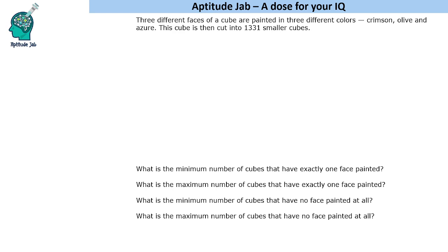This cube is cut into 1331 smaller cubes. We have to answer four questions: the minimum number of cubes that have exactly one face painted, the maximum number of cubes that have exactly one face painted, and the minimum and maximum for no face painted. This question is slightly different from the conventional cube question because here only three faces are painted, one of each color.